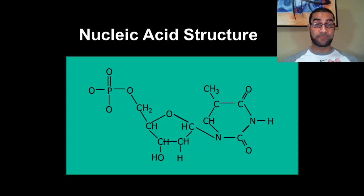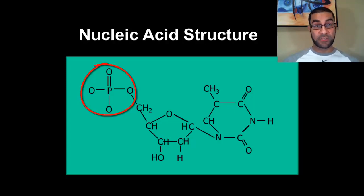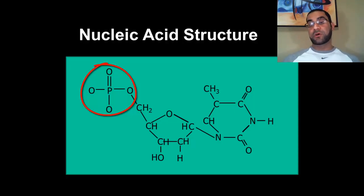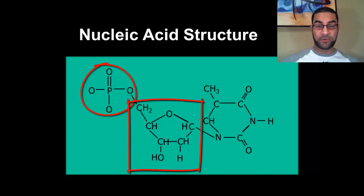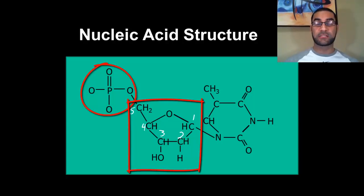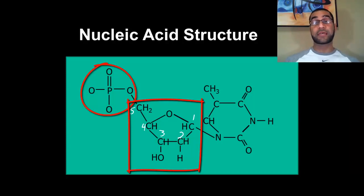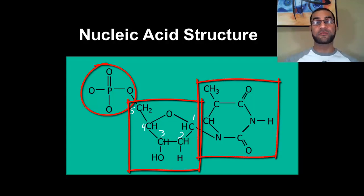A nucleotide is broken down into three parts. The first part is a phosphate group. The phosphate group is attached to a five-carbon sugar — you should be able to count five carbons in the middle structure, starting from carbon one on the right through carbon five, which attaches to the phosphate group. And then finally, you have one of four different categories of nitrogen bases connected to the sugar. So the three parts of a nucleotide are the phosphate, the sugar, and the nitrogen base.